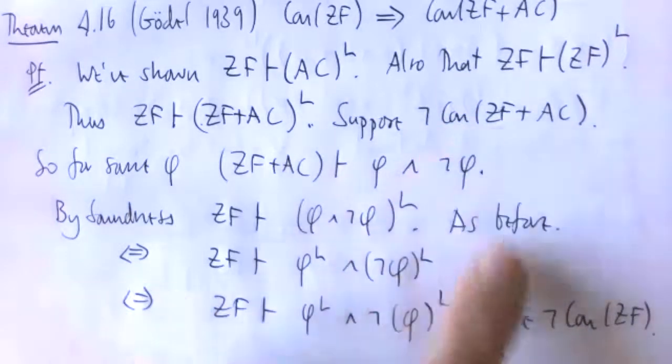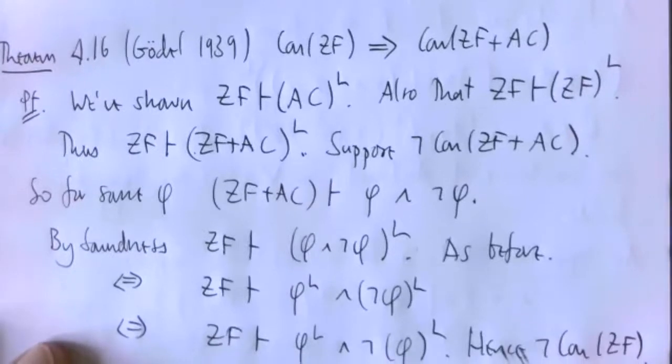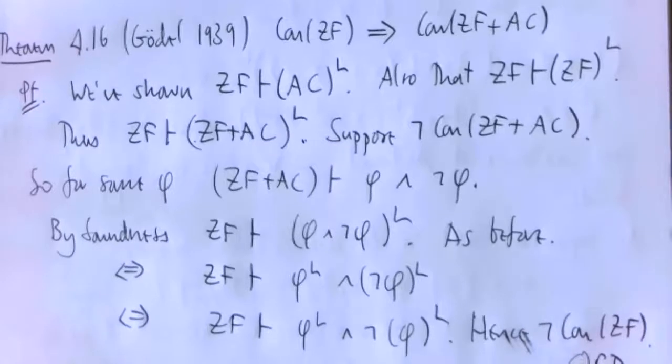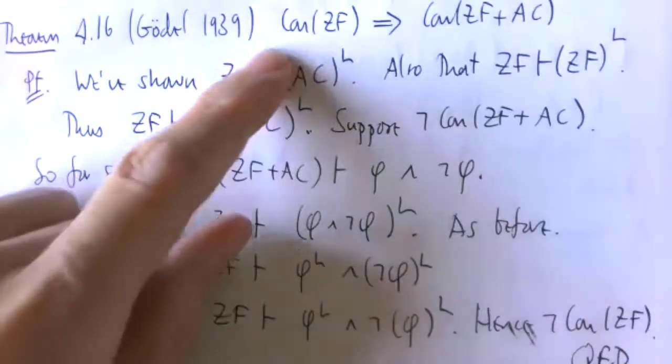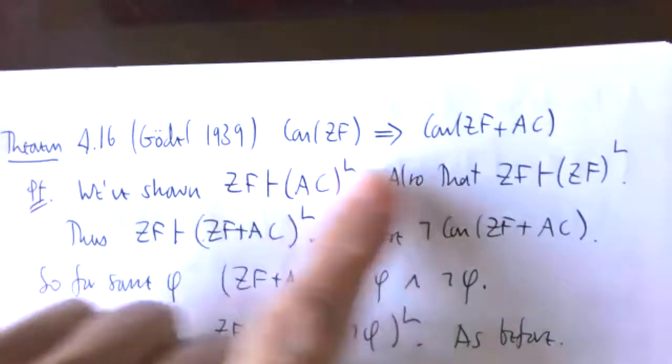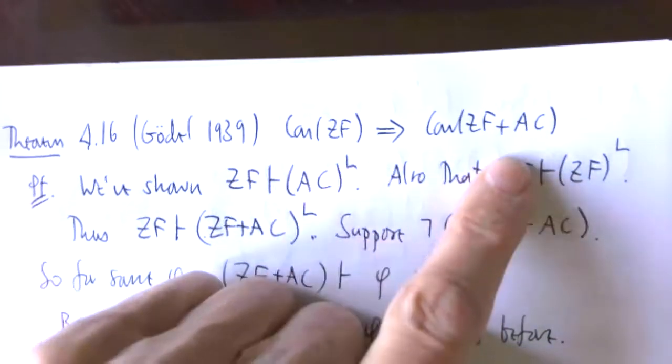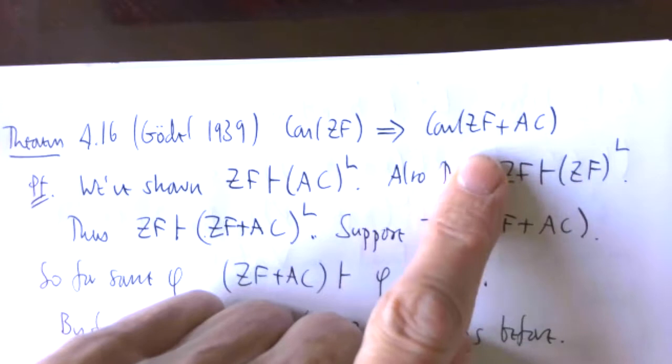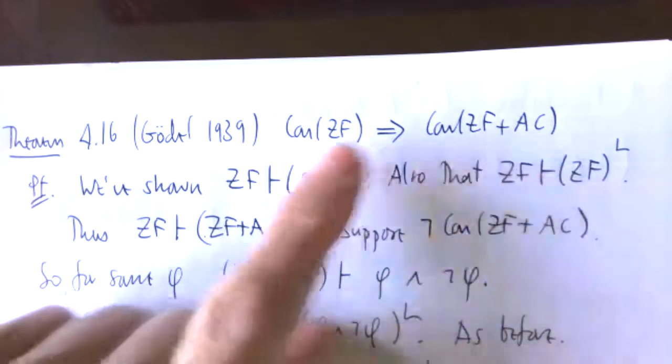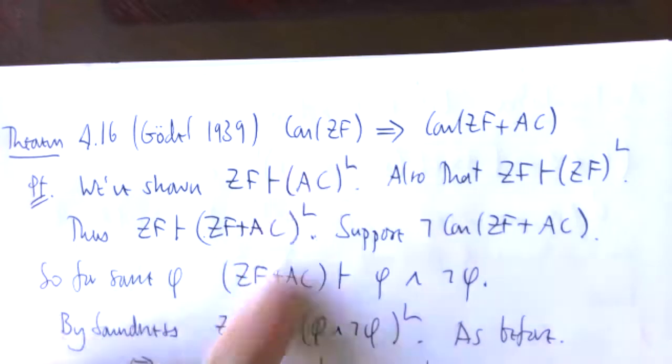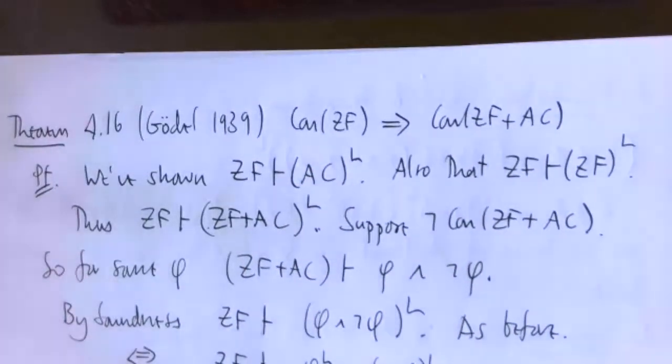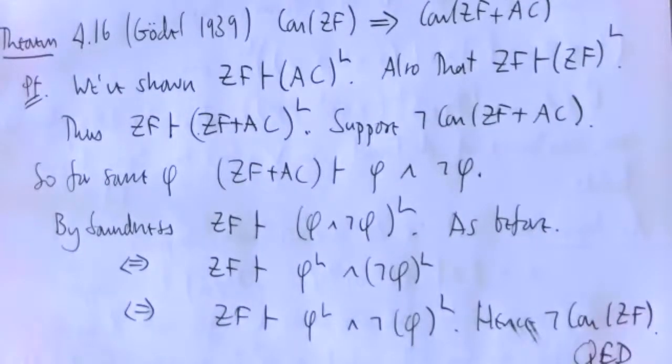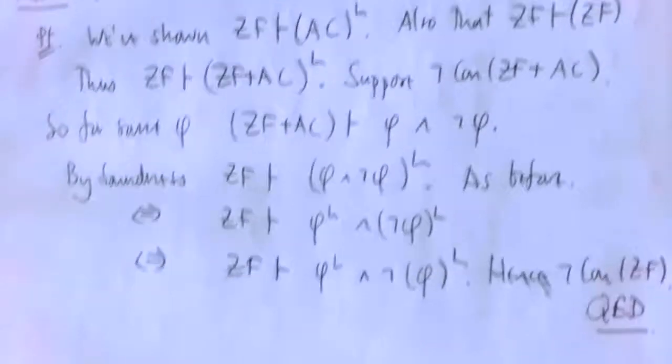So ZF is not consistent. So we've proven the contrapositive here. That tidies that up then from last time. So it's our second relative consistency proof. We can think of this as paraphrased as saying, it's safe to add AC to the axioms of ZF. It's no more of a dangerous system than it was before.